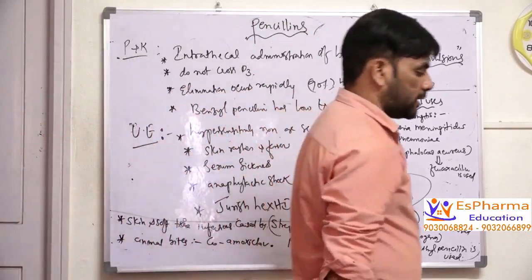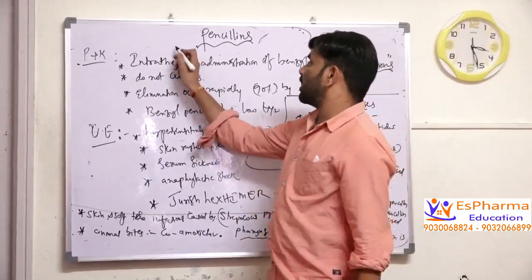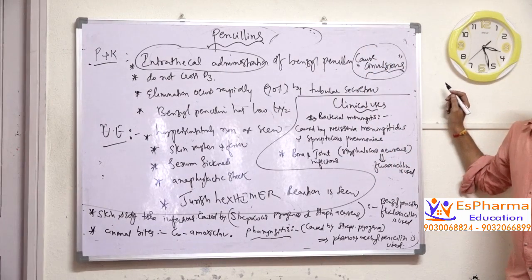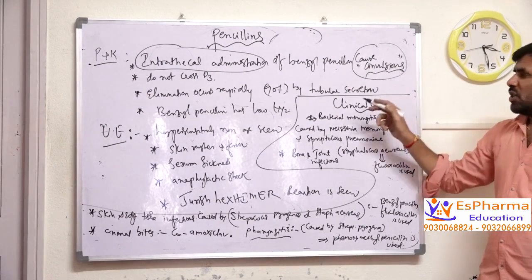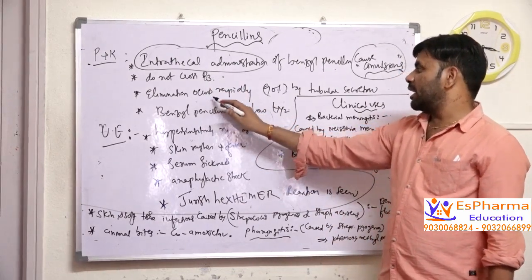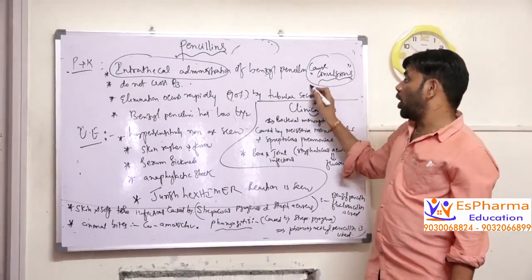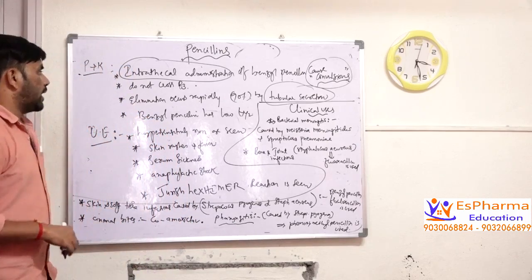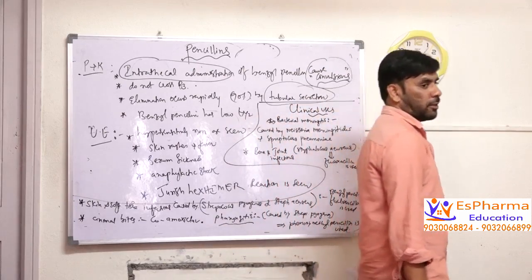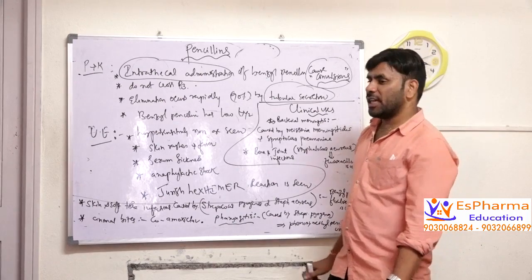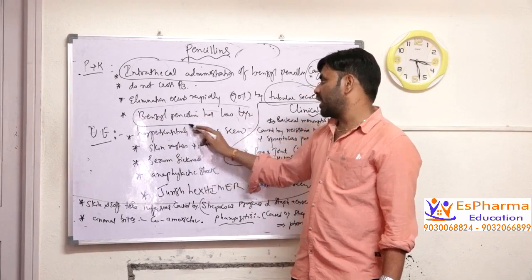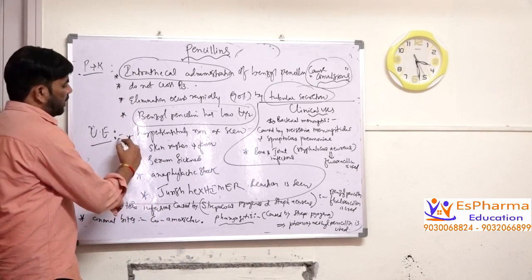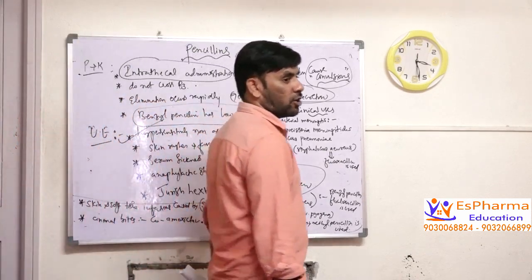Looking at the pharmacokinetic aspects of penicillin: when penicillin is given through intrathecal administration, benzyl penicillin will cause convulsions. Penicillin does not cross the blood-brain barrier. The elimination of penicillin occurs very rapidly, and excretion occurs by tubular secretion — 90 percent of penicillin is excreted through tubular secretion.